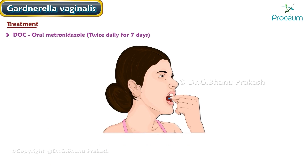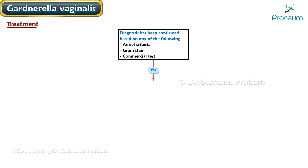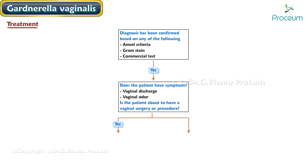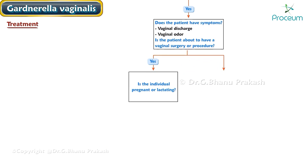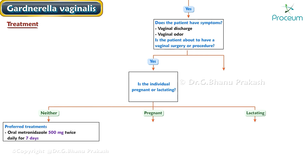The drug of choice is oral metronidazole, twice daily for 7 days. First, confirm the diagnosis based on Amsel criteria, gram stain, or commercial test. If confirmed, determine whether the patient has symptoms such as vaginal discharge, vaginal odor, or is about to have a vaginal surgery or procedure. If yes, assess whether the individual is pregnant or lactating. If neither pregnant nor lactating, the preferred treatment is oral metronidazole 500 mg twice daily for 7 days.